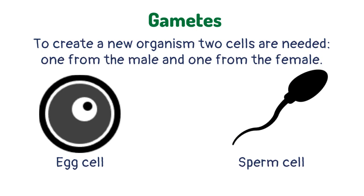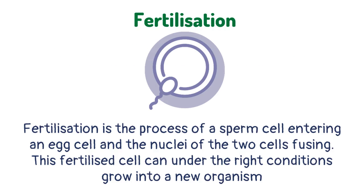These are called gametes. The male gamete is called a sperm cell and the female gamete is called the egg cell. Fertilization is the process of a sperm cell entering an egg cell and the nuclei of the two cells fusing. This fertilized cell can, under the right conditions, grow into a new organism.